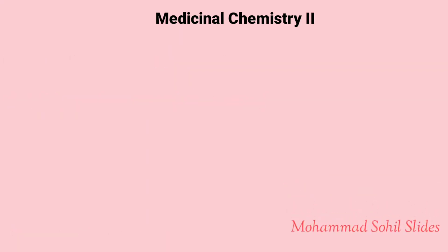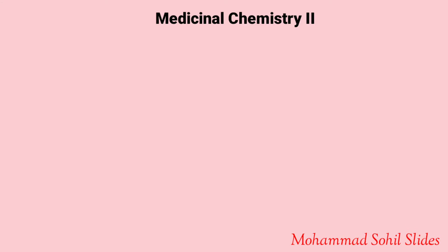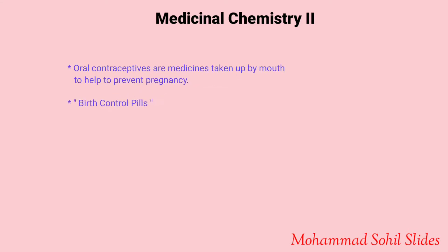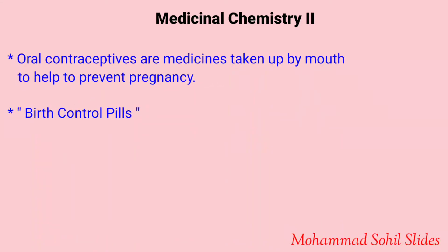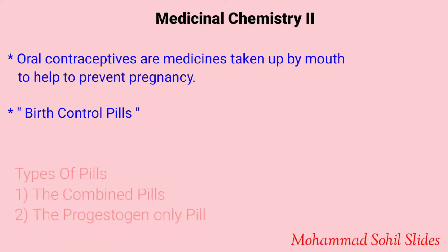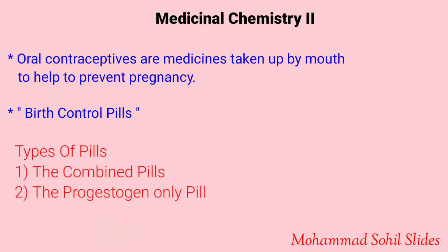What do you mean by oral contraceptives? Oral contraceptives are medicines taken by mouth to help prevent pregnancy. They are also known as birth control pills. There are two types of pills: first, the combined pills, and second, the progesterone-only pills.